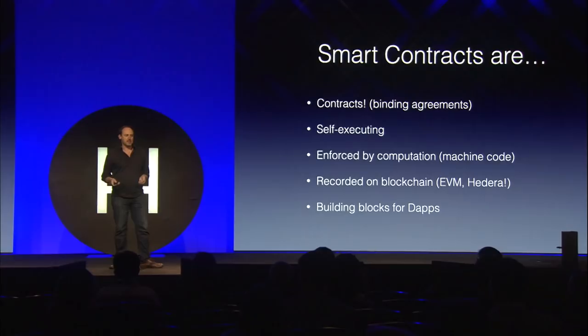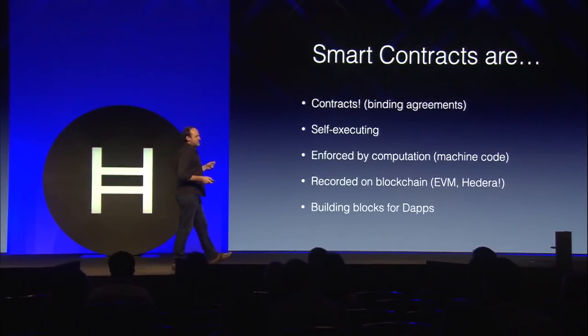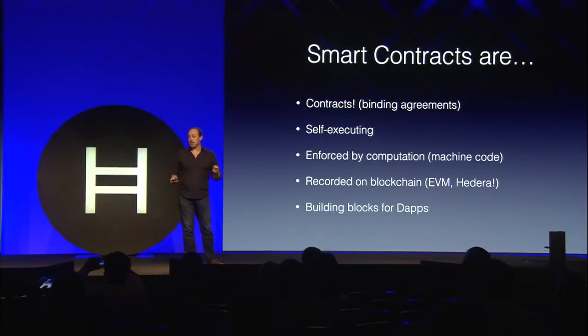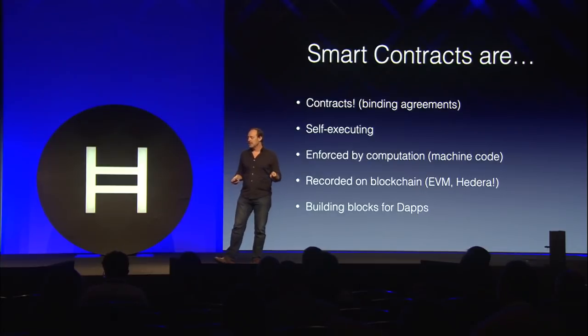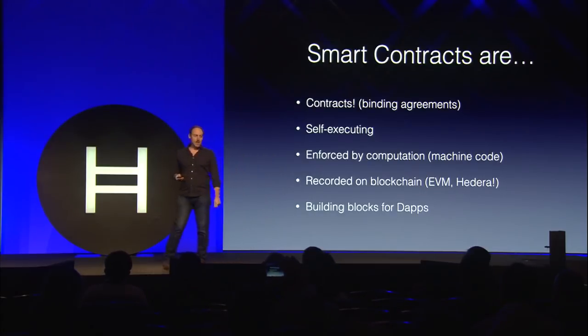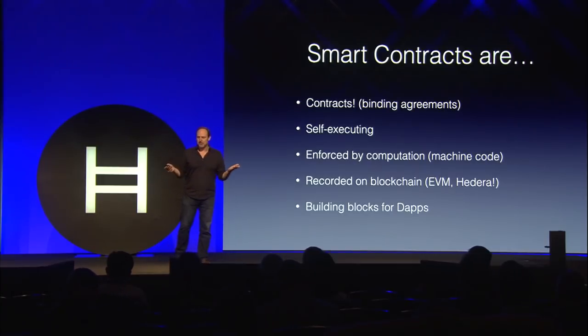So let's start with some basics: what is a smart contract? We all know what contracts are — everyone executed a contract when they signed on the line for this conference. Smart contracts are contracts; they're binding agreements between two or more parties. Whereas traditional contracts may be executed in a formal and legal way, enforced by laws or courts of law, smart contracts are self-executing and enforced by computation or machine code.